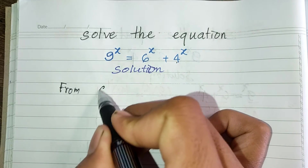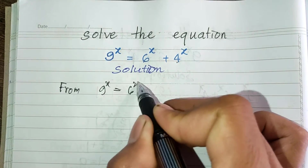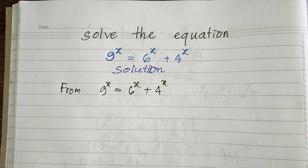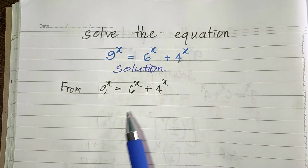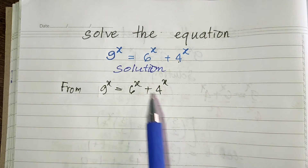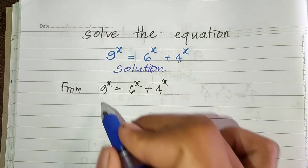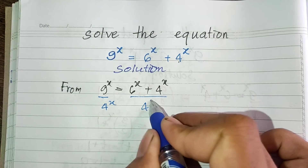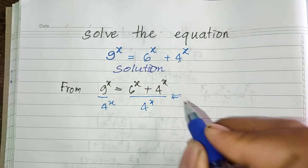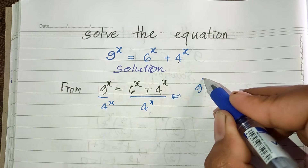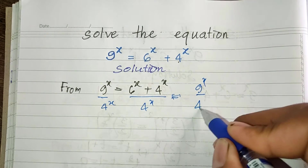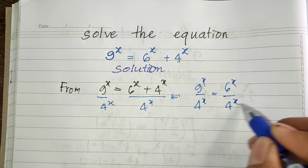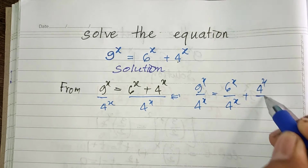Starting from 9^x = 6^x + 4^x, we must divide both sides of this equation by some term. So now I divide both sides by 4^x. I get: 9^x divided by 4^x equals 6^x divided by 4^x, plus 1.